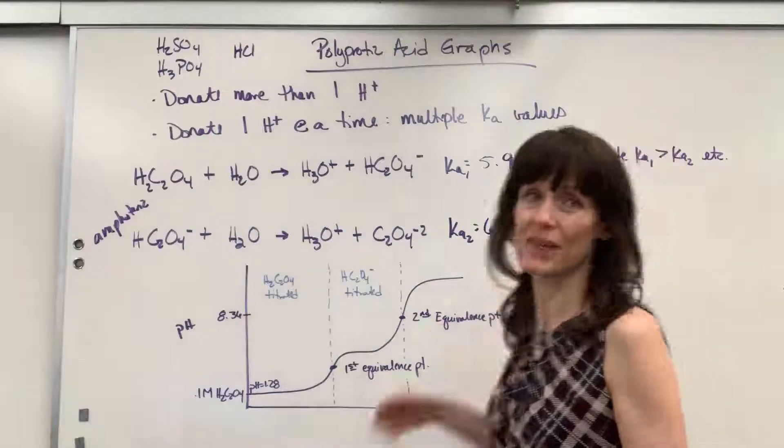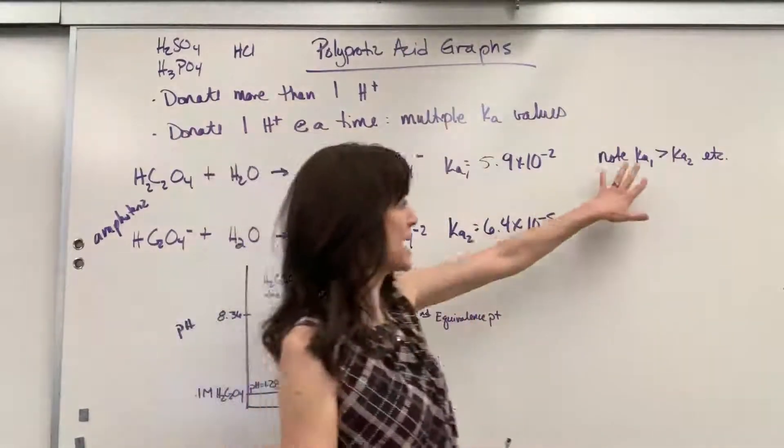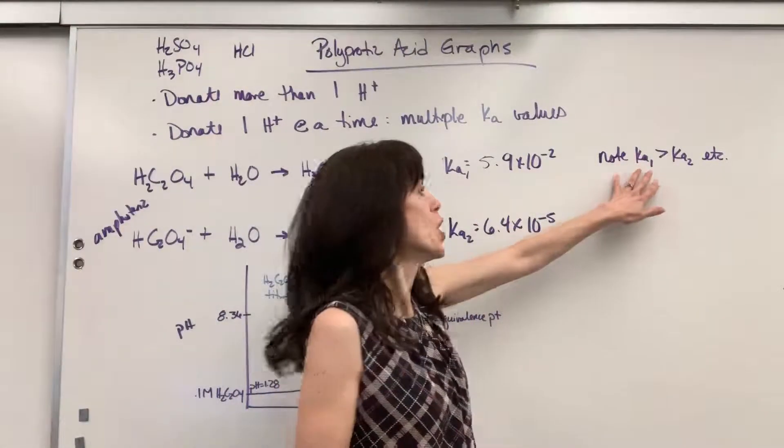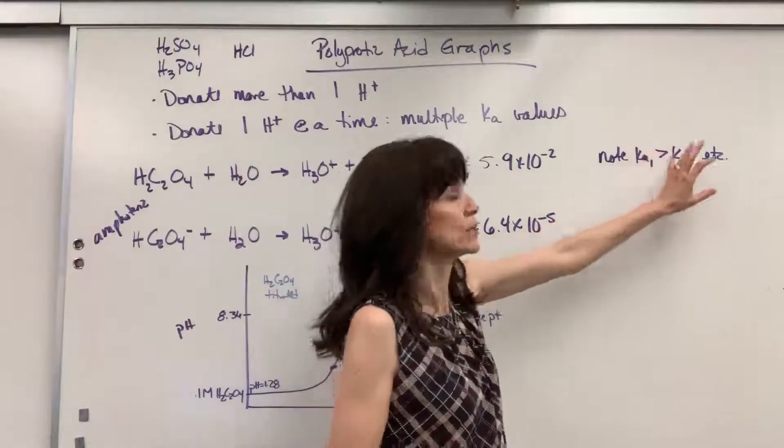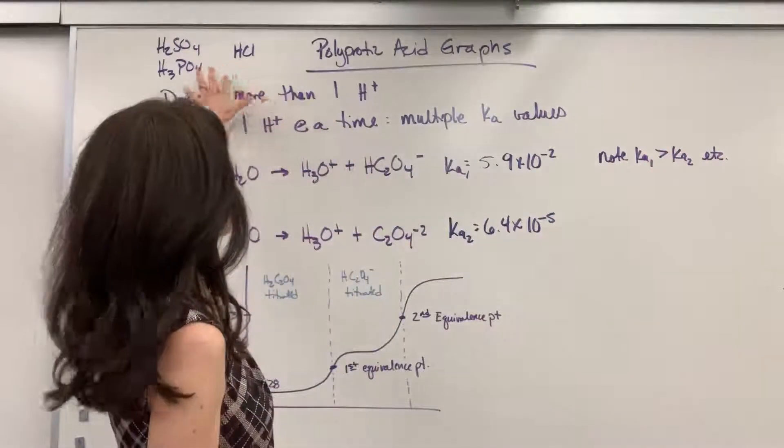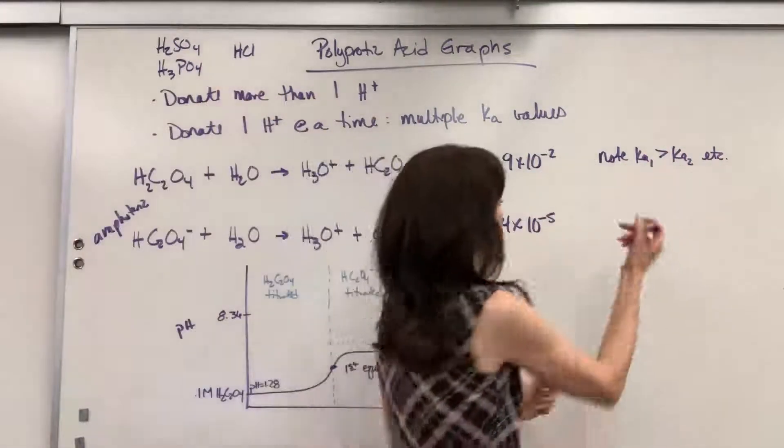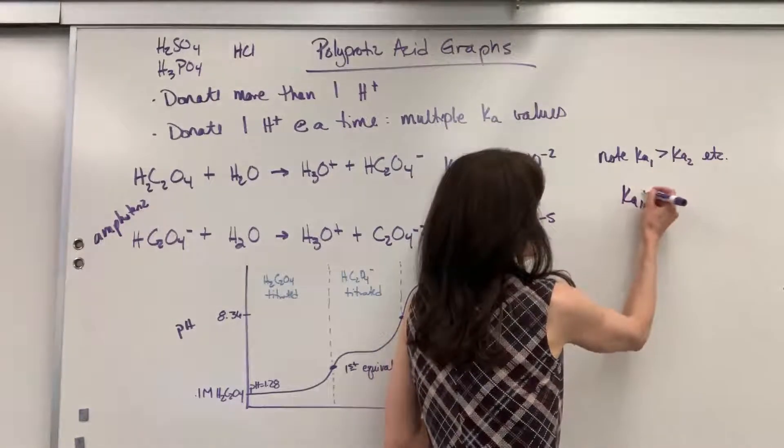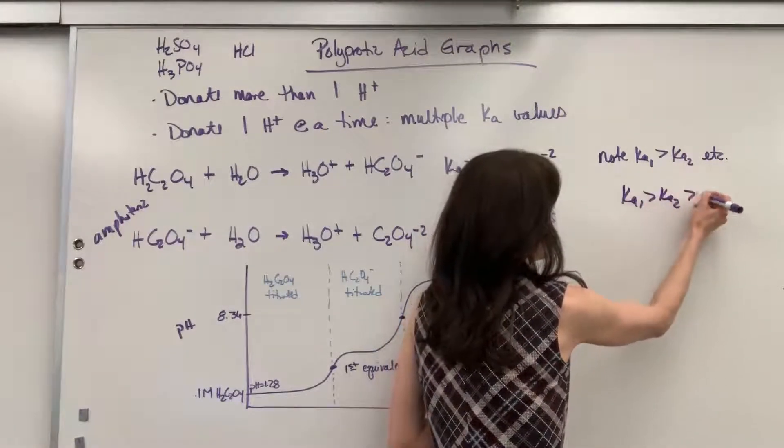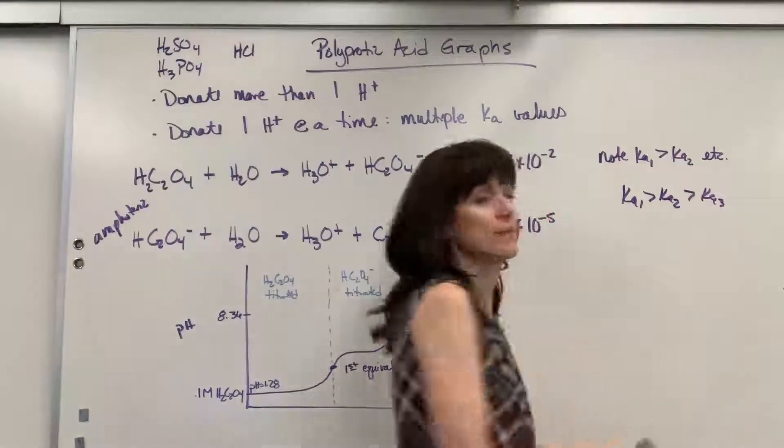Now, a little side note that I put over here. Ka1, the value itself, will always be greater than Ka2, etc. If I had a phosphoric acid, I would have Ka1 is greater than Ka2, which is greater than Ka3. Now, remember, oxalic acid is a weak acid, and so it's only going to partially dissociate.